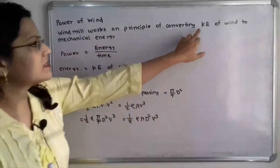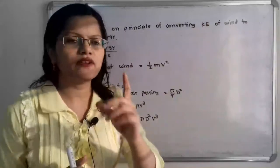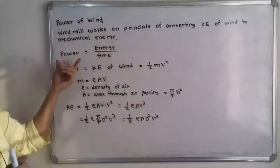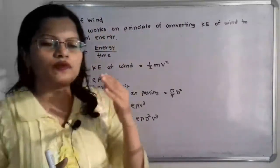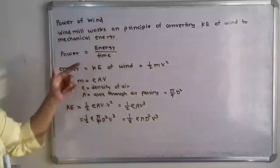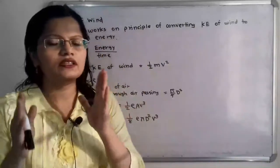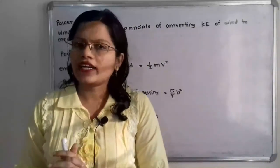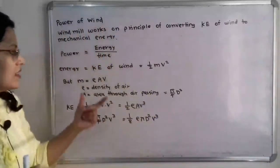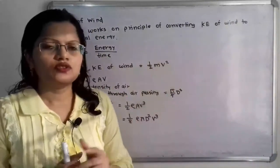We have to first find out what is the kinetic energy of the wind, and by using this kinetic energy we can find out what is the power of the wind. Power is equal to energy divided by time. In the case of wind, the energy is referred to as kinetic energy, and the formula for kinetic energy is KE = ½mv².